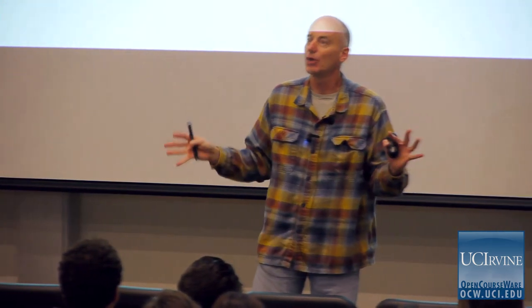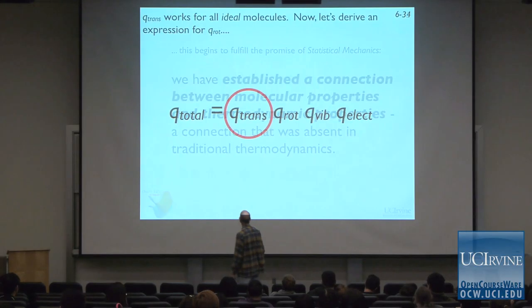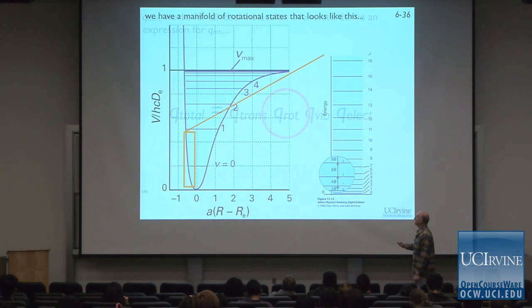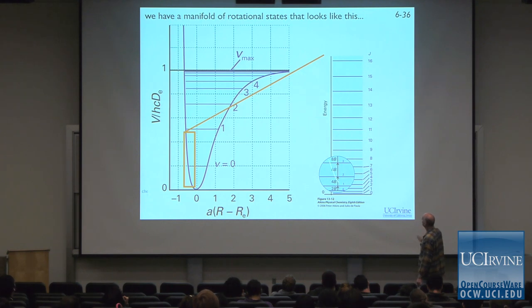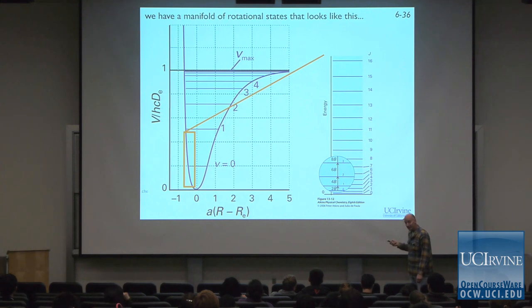We can measure these properties for molecules that don't store energy any other way — they don't rotate, they don't vibrate: atomic gases. Now, what if the molecule can rotate? Then it has another way to store energy. We have a manifold of rotational states that nests in between two vibrational states of the molecule — there's a manifold here, another one there, and so on. This adds a lot of complexity to the picture.